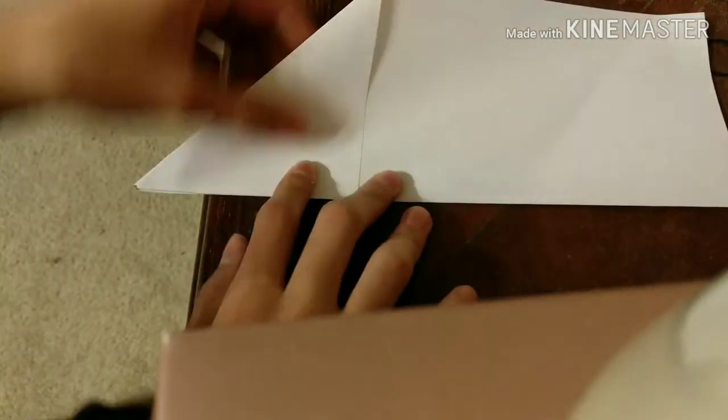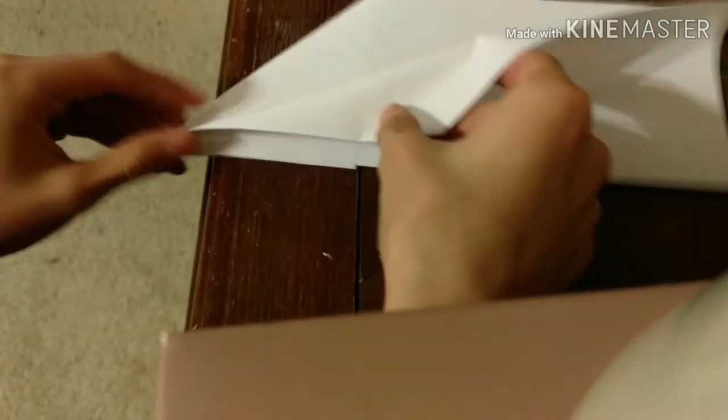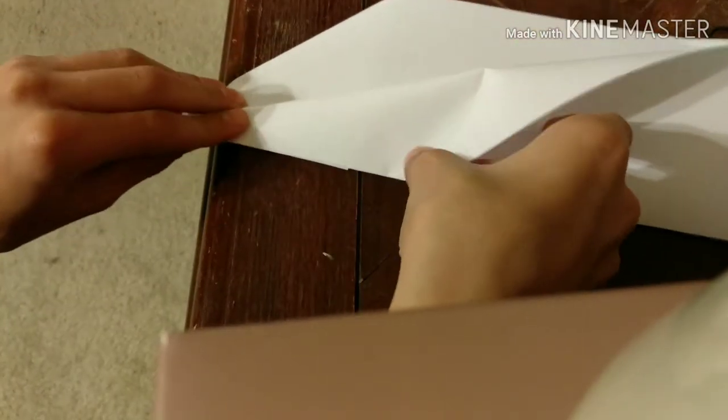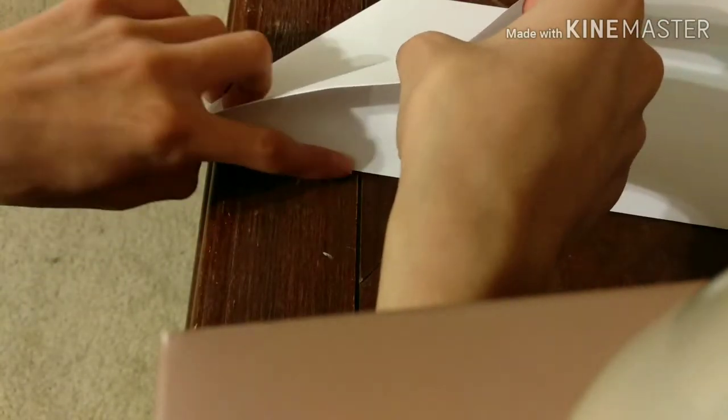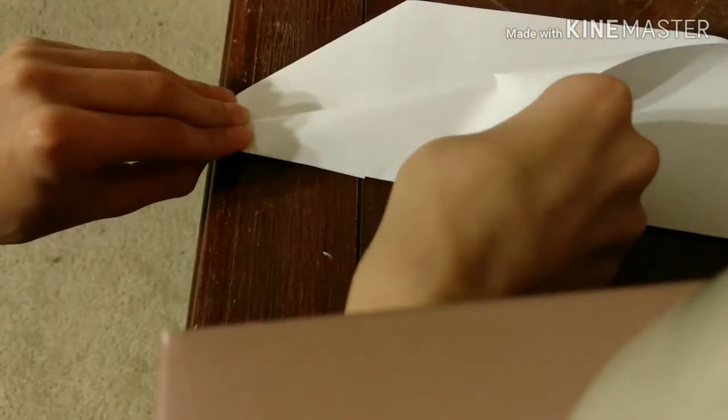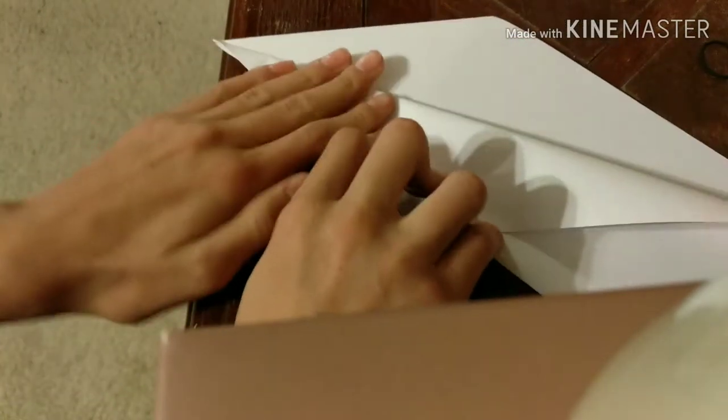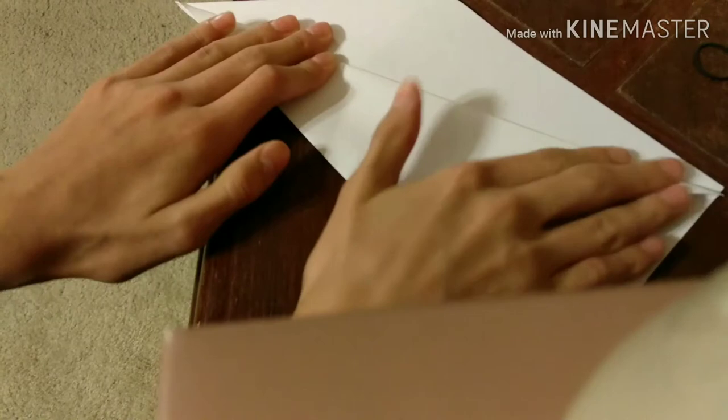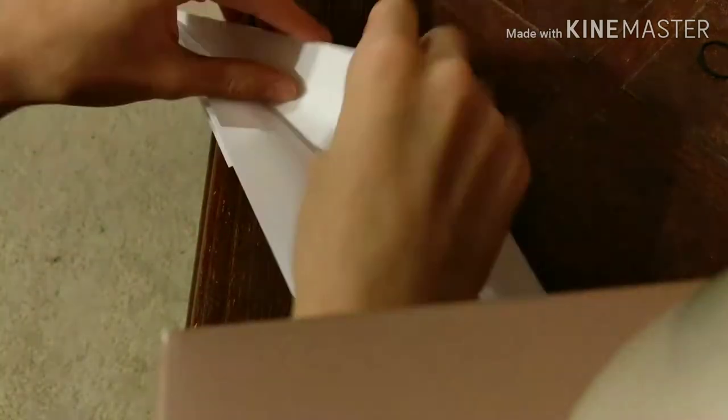Now you have this. What you want to do is take this flap and fold it to the edge here—this edge right here. You want to fold it there, then crease it. That's basically what you do.